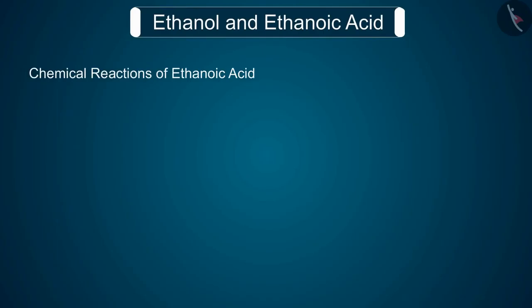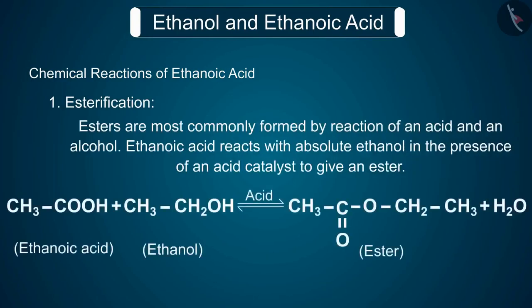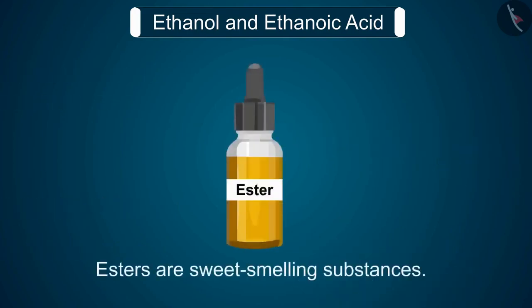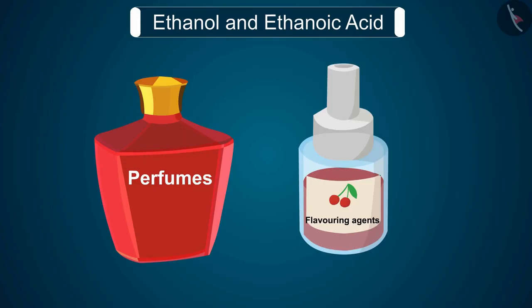We will now discuss the chemical reactions of ethanoic acid. Reaction 1: Esterification. Esters are most commonly formed by reaction of an acid and an alcohol. Ethanoic acid reacts with absolute ethanol in the presence of an acid catalyst to give an ester. Generally, esters are sweet smelling substances and are used in making perfumes and as flavoring agents.